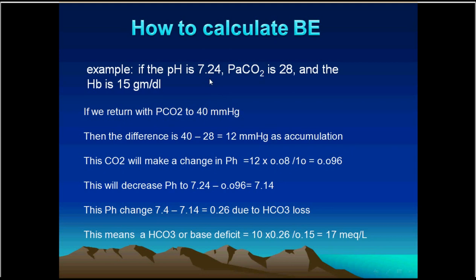This 0.1 drop means that restoring carbon dioxide from 28 to 40 will drop the pH from 7.24 to about 7.14. So the difference between 7.14 and 7.4, which is 0.26, is due to a deficiency — a loss of bicarbonate. We apply another rule: a 10 mEq change in bicarbonate produces a 0.15 change in pH. Therefore, the base deficit in this case is 10 × (0.26 / 0.15), giving approximately 17 mEq per liter. So we have a base deficit of 17 mEq of bicarbonate.